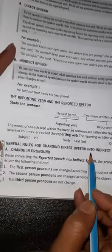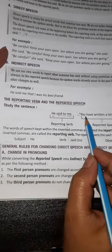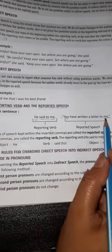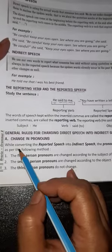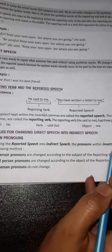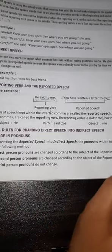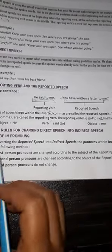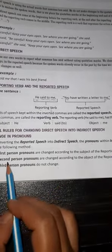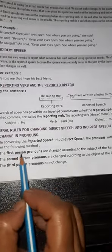General rules for changing direct speech into indirect speech. First: change in pronouns. The pronouns inside the inverted commas — such as 'you', 'me' — are changed. While converting the reported speech into indirect speech, the pronouns within the inverted commas are changed according to the following method.